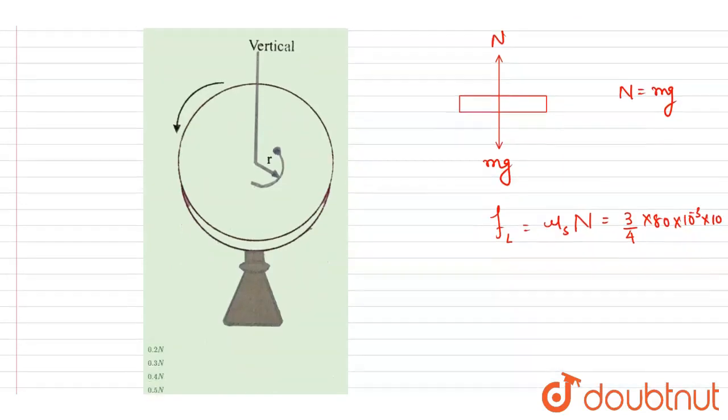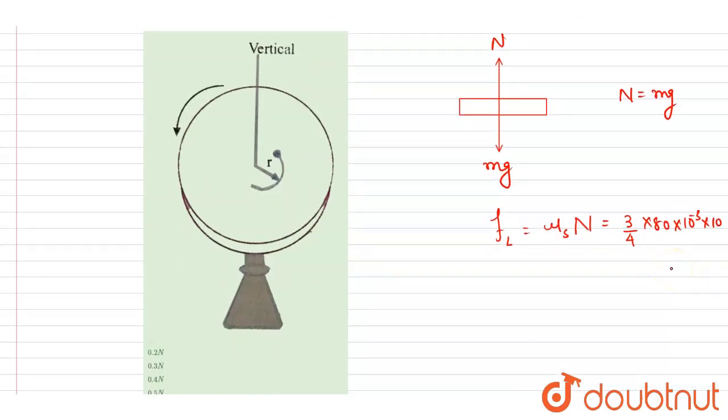into g. See, this will be the force. 800 divided by 1000, it will be 8 by 10, 8 by 10, so it will be 4 by 5. So it is 3 by 5, the limiting friction.